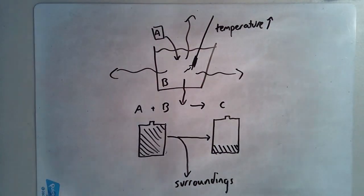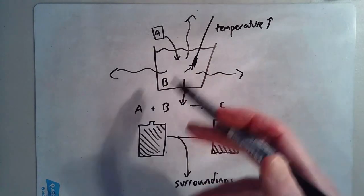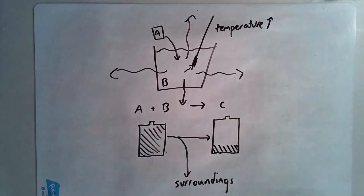Because the thermometer is part of the surroundings. Is the thermometer A? No. Is the thermometer B? No. Is the thermometer C? No. So it's part of the surroundings. It doesn't matter that it's inside. It's been stuck into B. It's part of the surroundings. It's not B. It's not A. It's not C. It's the surroundings.